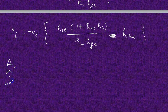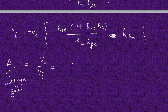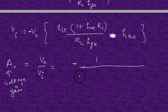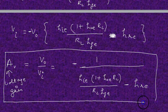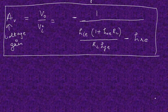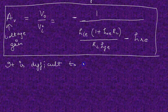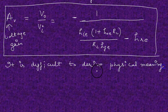From here, we are finding voltage gain — output voltage upon the input voltage. This is the expression for voltage gain. But it is very difficult to conclude or to derive physical meaning from this equation.